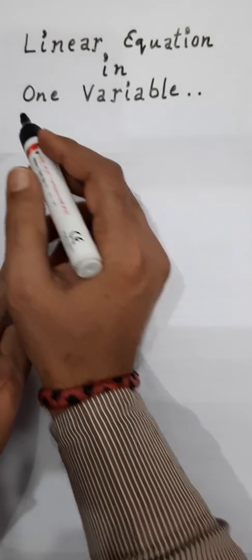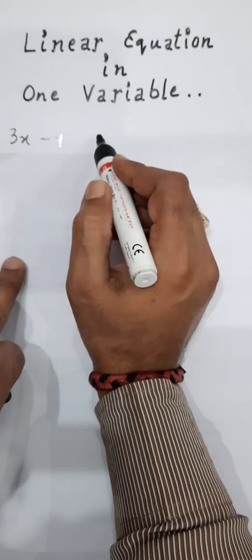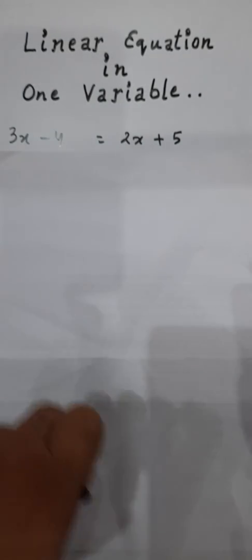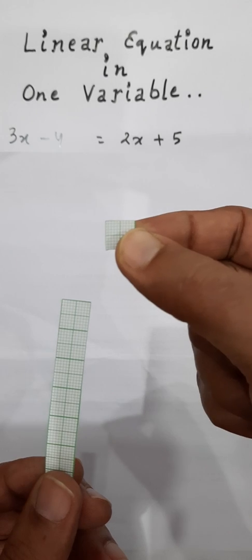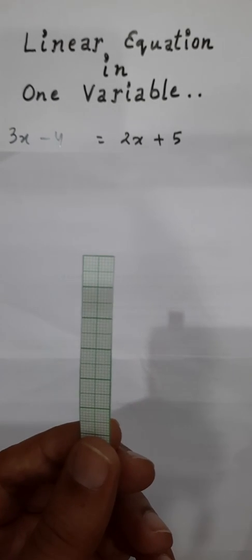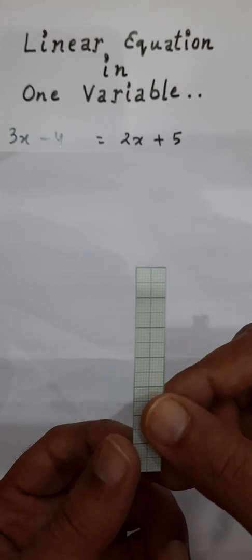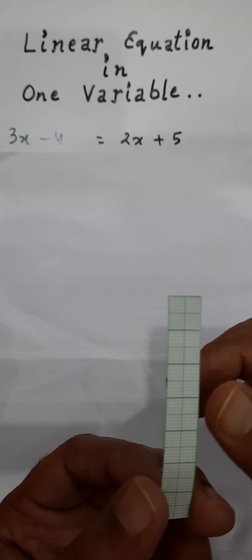With the help of this, let us perform the activity where I will be showing you how to get the value of x in 3x minus 4 equals 2x plus 5. For the constants, you will be using a small graph of 1 into 1, and for the variable, you will be using the rectangular graph of 1 into 7. You may take any size — 1 into 4, 1 into 8, 1 into 9, whatever you want.